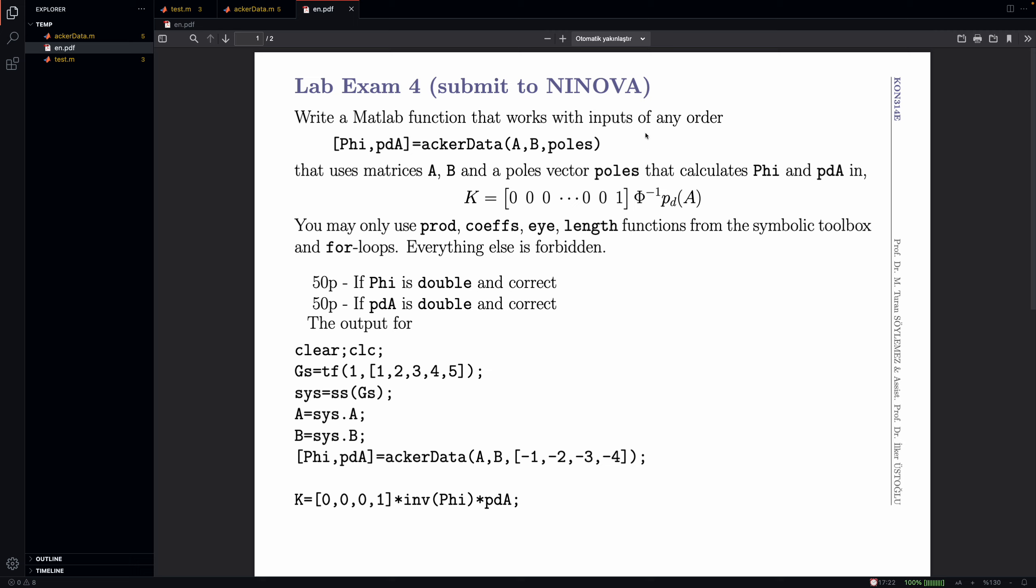The inputs are A and B matrices, these are system matrices, and we will have a vector of poles, which are the desired poles. You may only use product, coefs, i, length, and the for loop. Everything else is forbidden, and of course you can use symbolic s because of the symbolic toolbox.